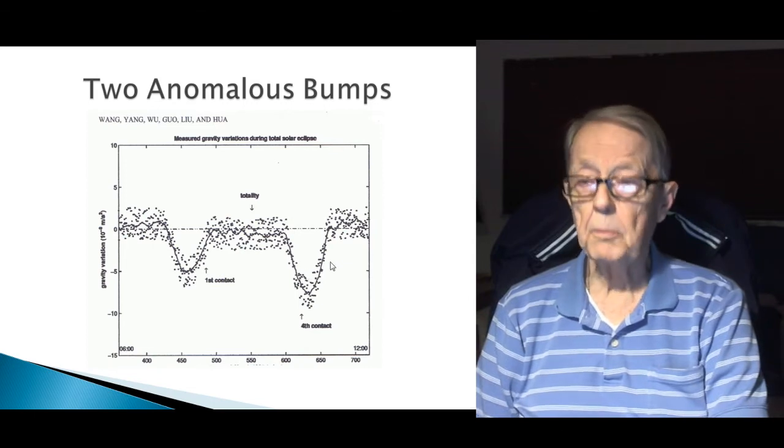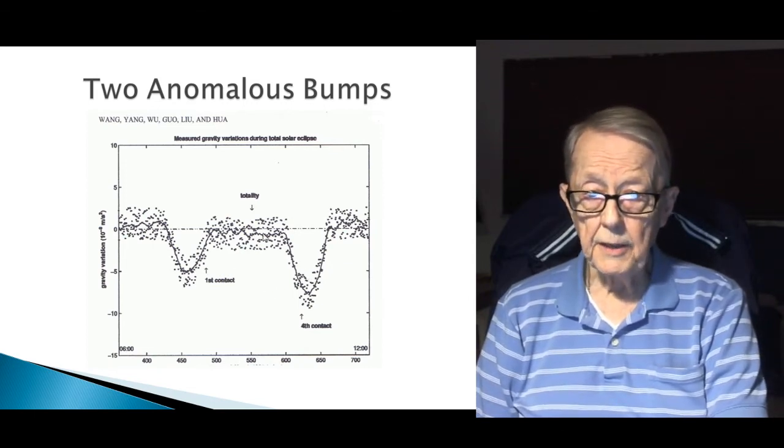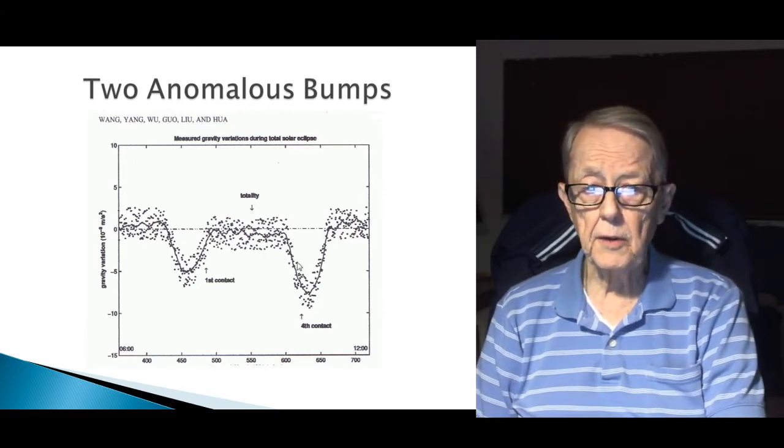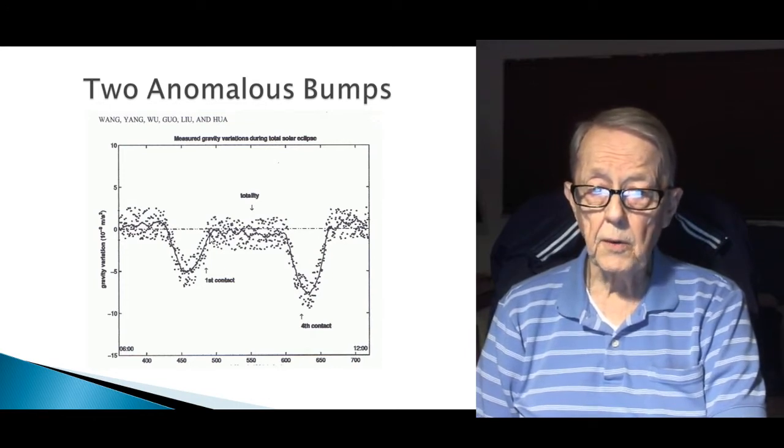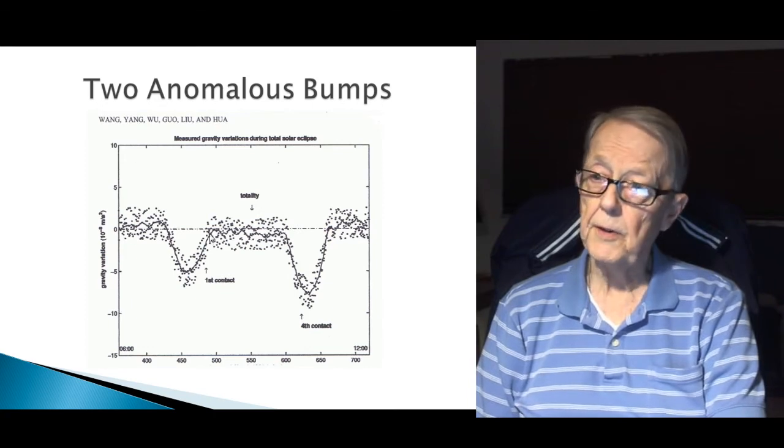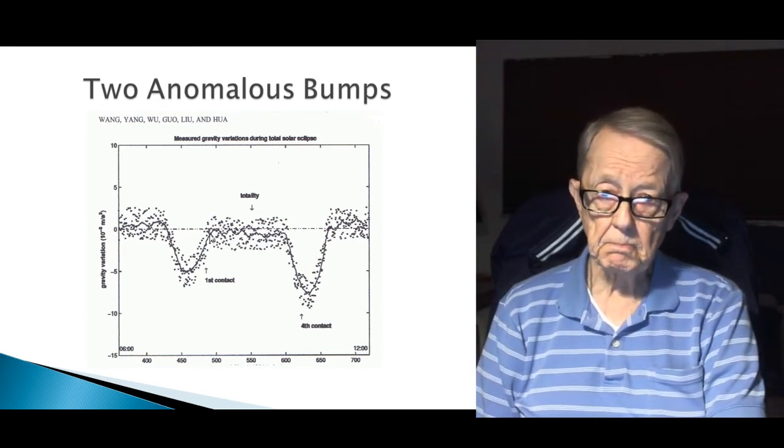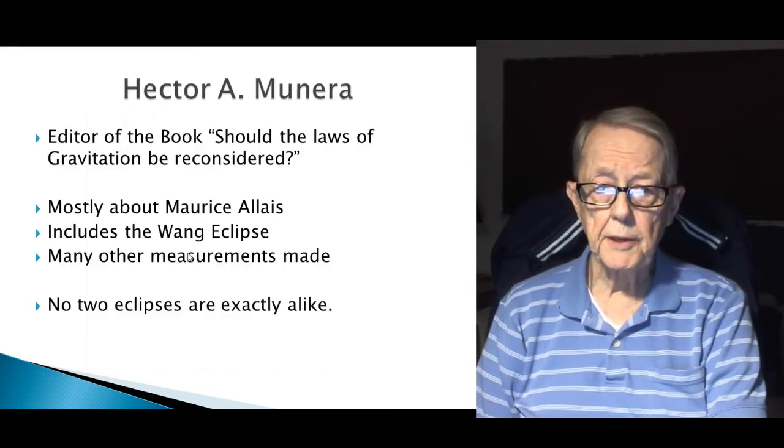And the third thing that they don't like is, not only do they don't like the bumps, but they don't like the fact that there's almost no decrease during a total eclipse. You certainly would expect a different gravitational measurement during the eclipse. Two bumps, two bumps, two anomalies, two bumps there.